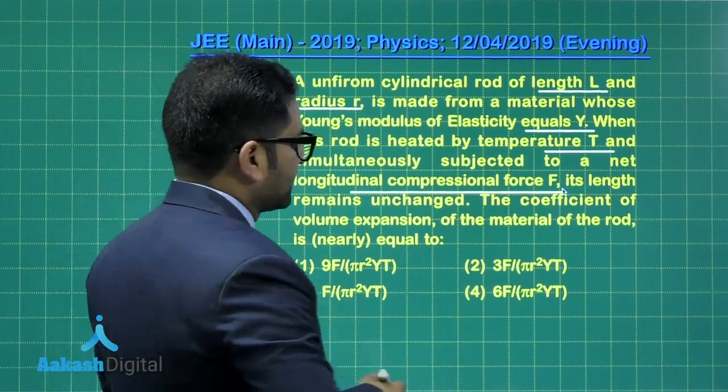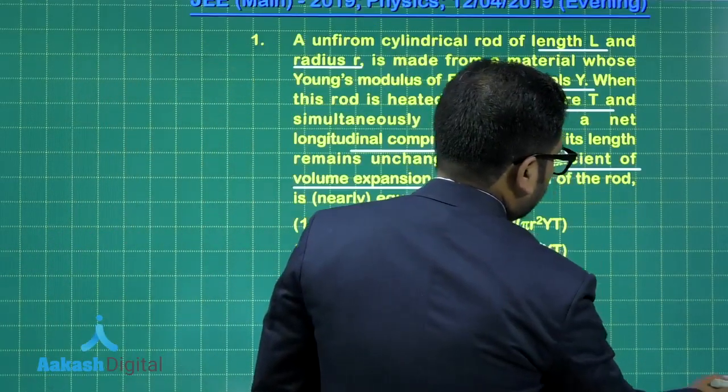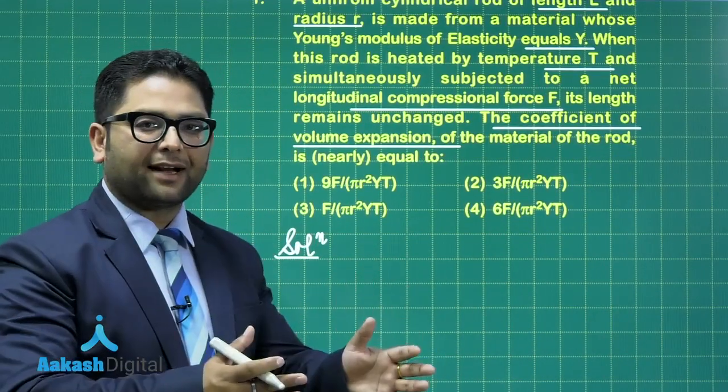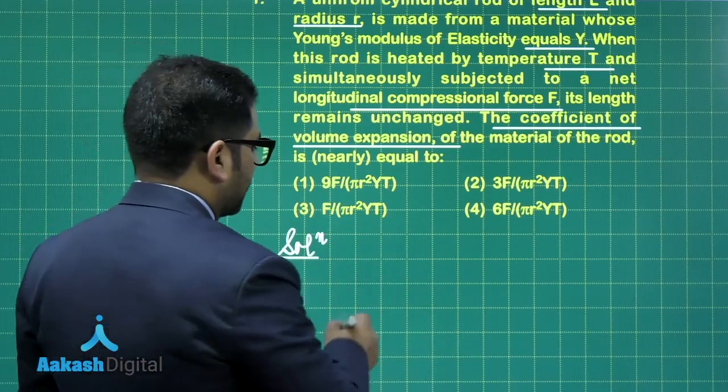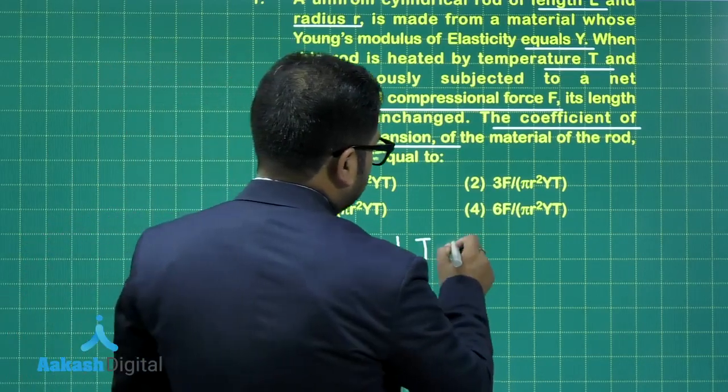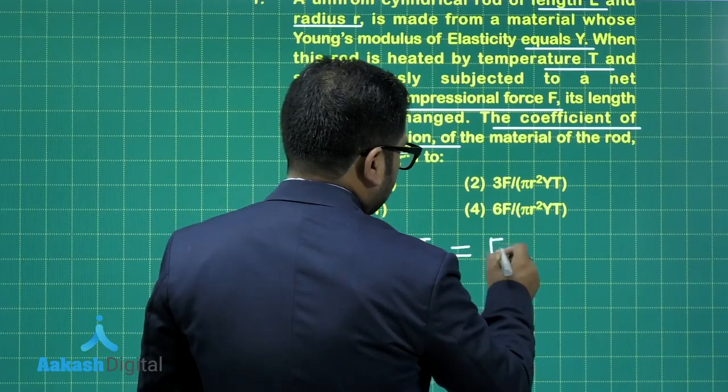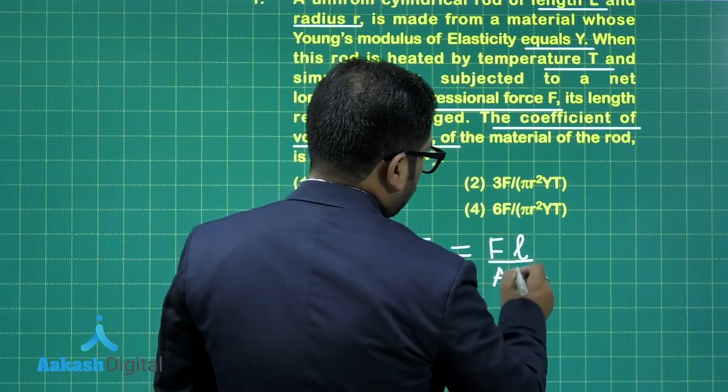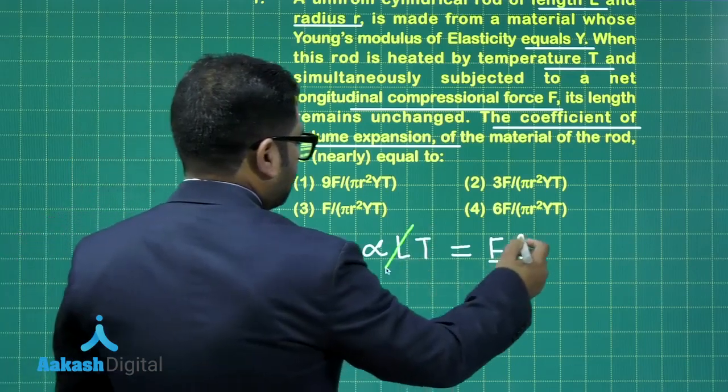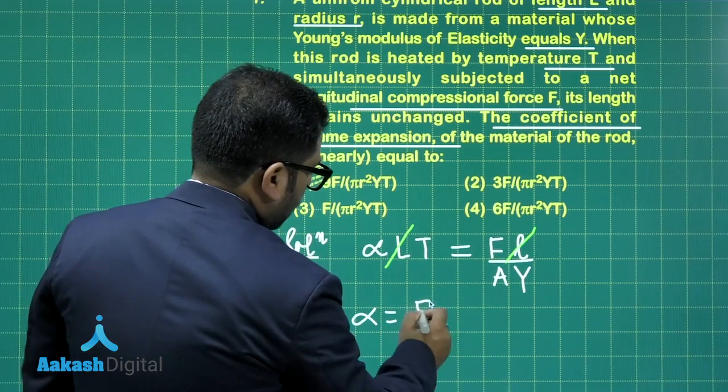Based on this data, I need to calculate the coefficient of volume expansion, denoted by gamma. The solution is simple. The expansion effort is exactly nullified by the contraction effort. So alpha L T is the expansion due to temperature rise, or thermal expansion. The same change in length due to mechanical force is FL upon the cross sectional area into Young's modulus of elasticity. Now you can see the length part will be canceling, and from this I can easily write alpha equals F upon cross sectional area Y and the rise in temperature.